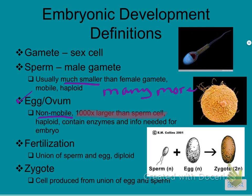Both sperm and egg are haploid, as noted, and they contain the enzymes for the embryo. The egg essentially becomes the embryo with the sperm in it, so the egg has to have a lot more information than a sperm cell. Fertilization is simply the union of sperm and egg, making the cell diploid — in humans, 23 chromosomes from each parent gives us 46 in the baby. The zygote is the cell produced from this union of sperm and egg.